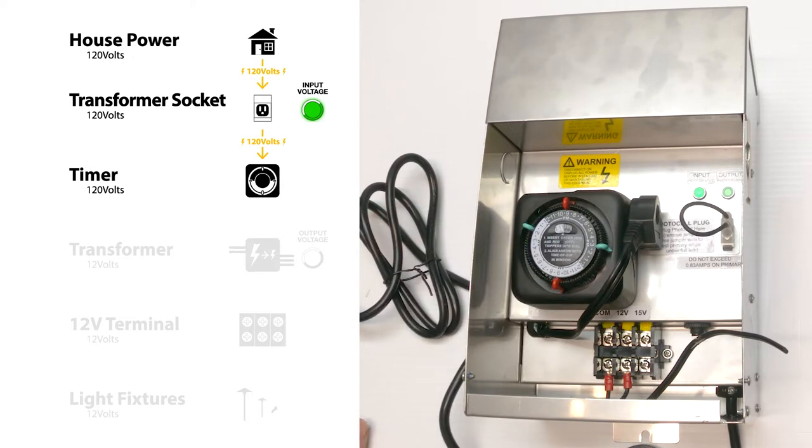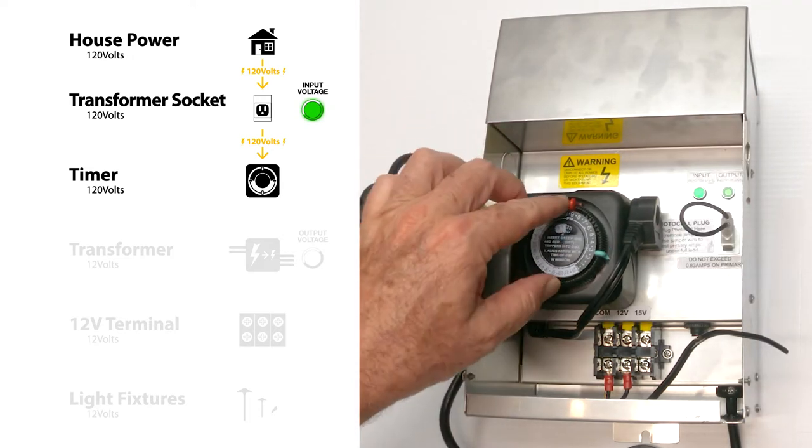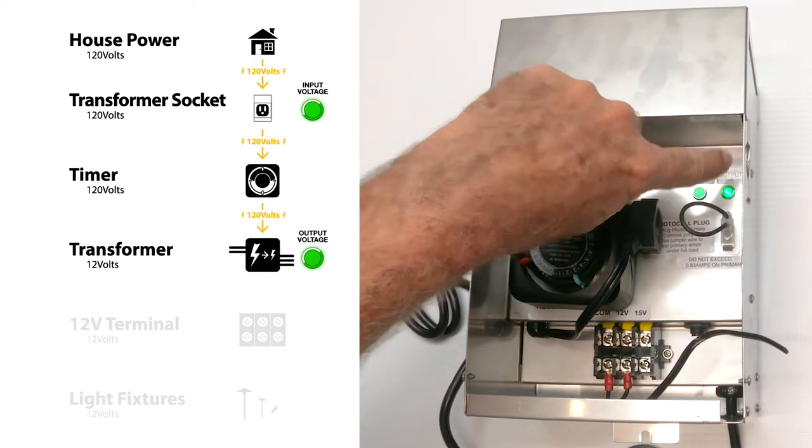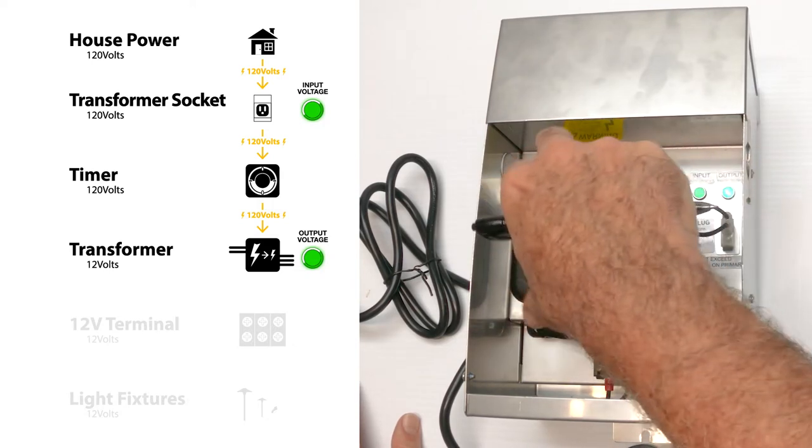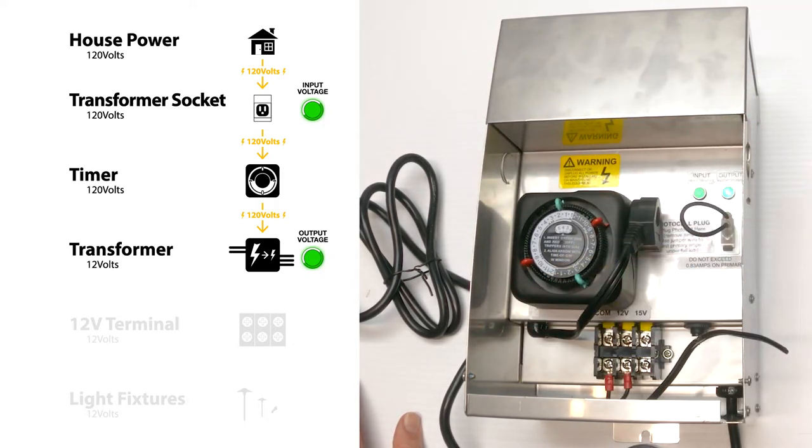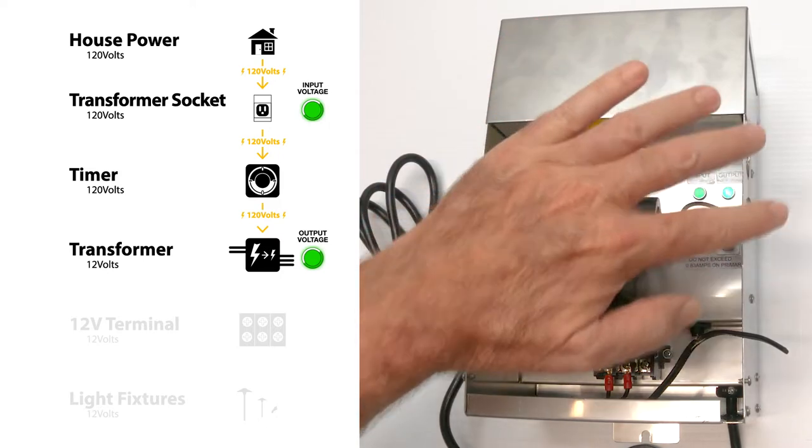And timer's plugged in. The timer's working, but still no output. That's because the timer is off. So rotate it until the timer comes on. Now we have output. So now this timer is a 120 volt timer. It is allowing us to send the 120 volts, which is right here into the transformer coil inside the box. So now that's working.